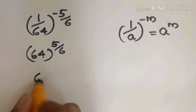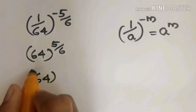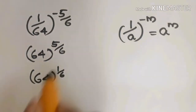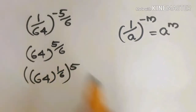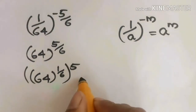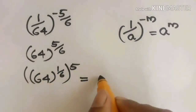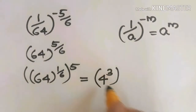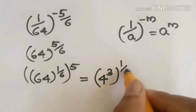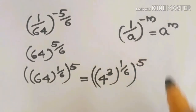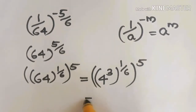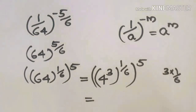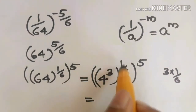We will add 64 all raised to 1 by 6. If we add 5 by 6, that is 5 into 1 by 6, all raised to 5. That is equal to 64, and we know 4 cubed is 64. So we have 4 raised to 1 by 6, all raised to 5. The cube is equal to 3 into 1 by 6, and the answer is 3 into 1 by 6.